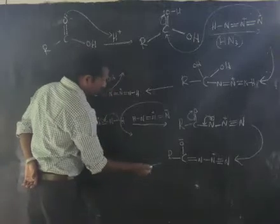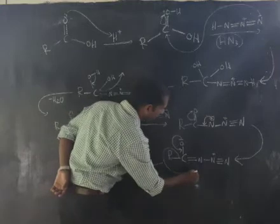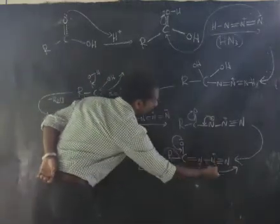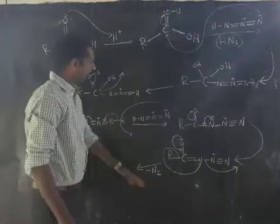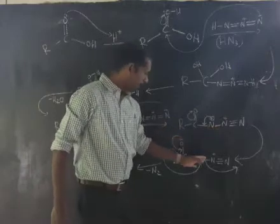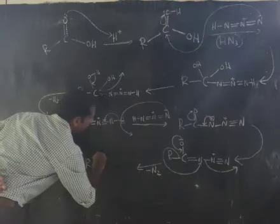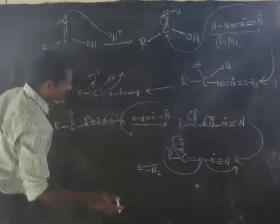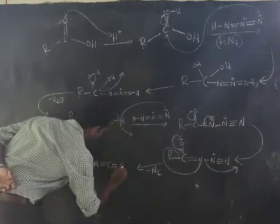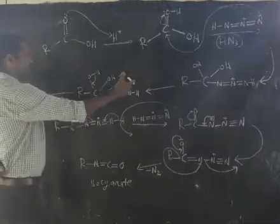In the next step, that pair of electrons comes back in a concerted mechanism: immediately the alkyl group R migrates to nitrogen at the same moment N₂ is expelled (−N₂). We then get R attached to nitrogen: R-N=C=O, which is isocyanate.